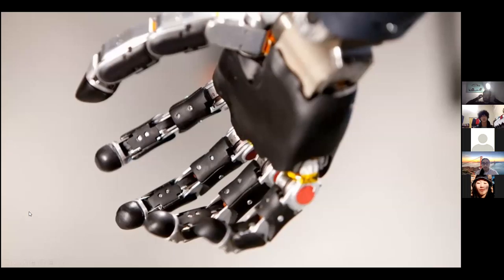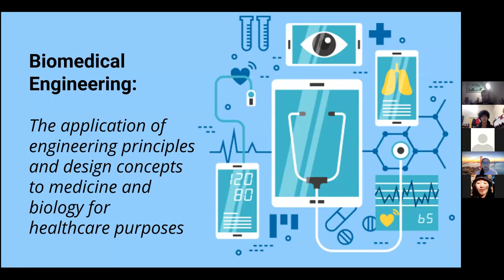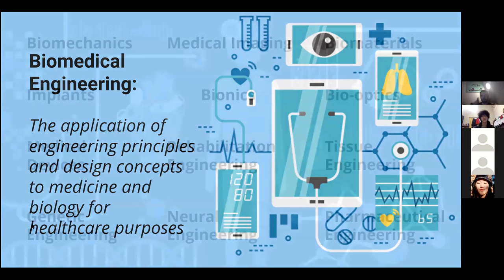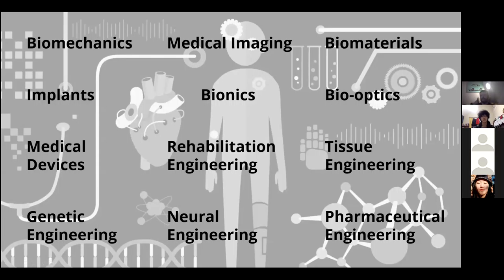When most people hear biomedical engineering, the first thing they think of is, oh, you must build robotic limbs or prosthetics or orthotics. And despite that being my entry into the career, that's not all that biomedical engineering is — it's actually quite a lot of things. In a very big picture level, biomedical engineering is the application of engineering principles and design concepts to medicine and biology for the purposes of healthcare. That's really broad, and there are a lot of different spheres of biomedical engineering — there's actually a really good Wikipedia list that'll send you down a rabbit hole.